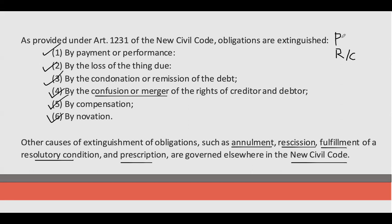Definitely alam nyo naman yung payment, but we're going to discuss the different kinds of payments, the special mode of payments. We have C — Compensation. May utang ako sa'yo, may utang ka rin sa'kin. Siyempre alangan namang bayaran pa kita, alangan namang bayaran mo rin ako, so quits na lang tayo. Or kung may utang ako sa'yo na 10,000, may utang ka sa'king 5,000, ang bayaran ko na lang sa'yo is yung pinaka net amount of 5,000. Hindi na dapat yung buong 10,000 kasi sisingilin ko rin naman yung 5,000 sa'yo. So, Compensation.